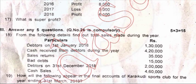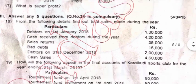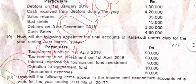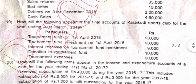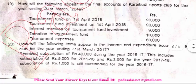From the following details, find out the total sales made during the year. How will the following appear in the final accounts of Car Equity Sports Club for the year ending 31st March 2019? How will the following items appear in the income and expenditure accounts of a club?